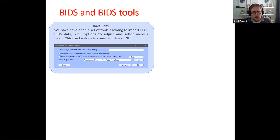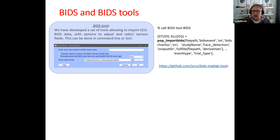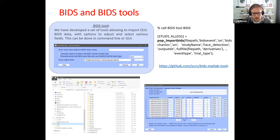We start with BIDS — the Brain Imaging Data Structure. We developed a means to share data, and the way they are structured allows us to develop BIDS tools. These tools allow you to import all of the data automatically in one go. It's a single line of code — you specify where your data are and any options you want — and it imports BIDS-structured data into EEGlab in just one command, creating a whole study with all the information you need.